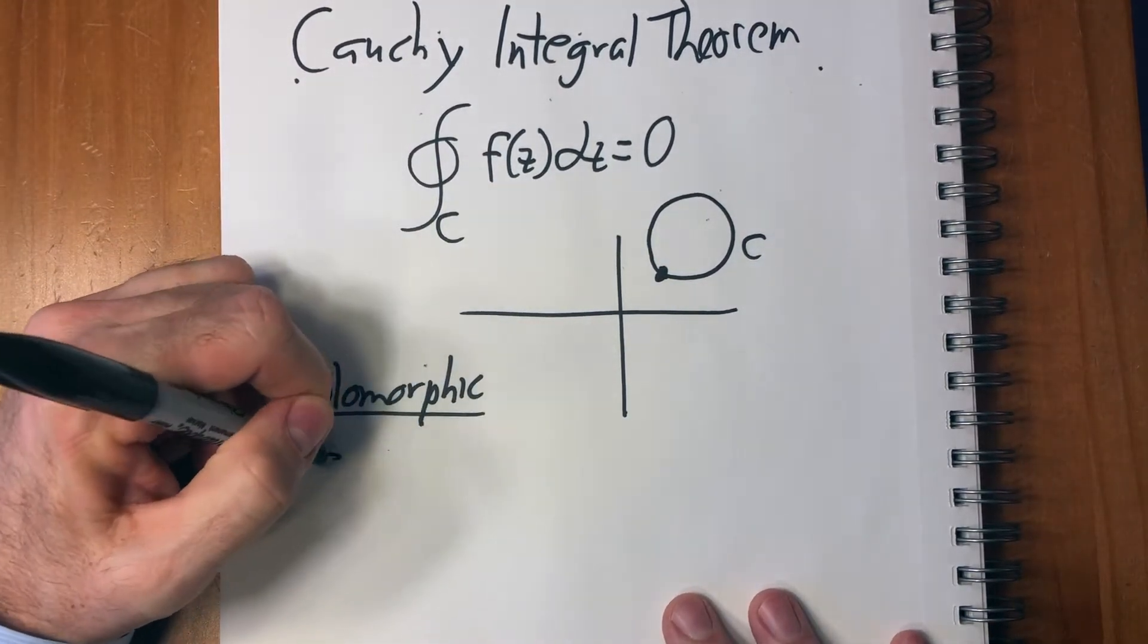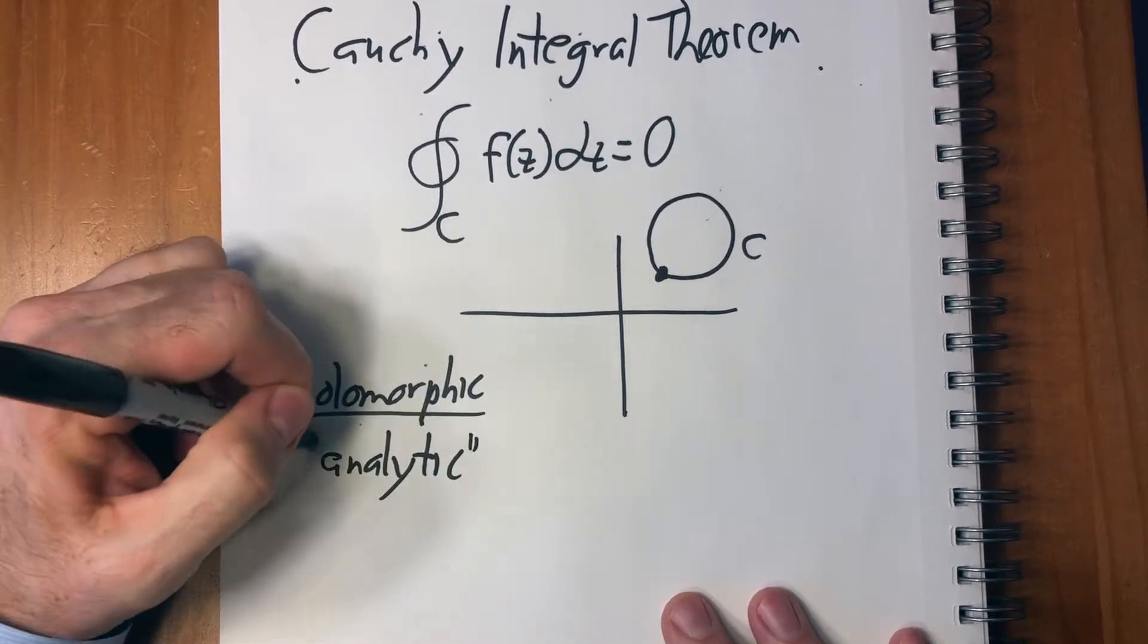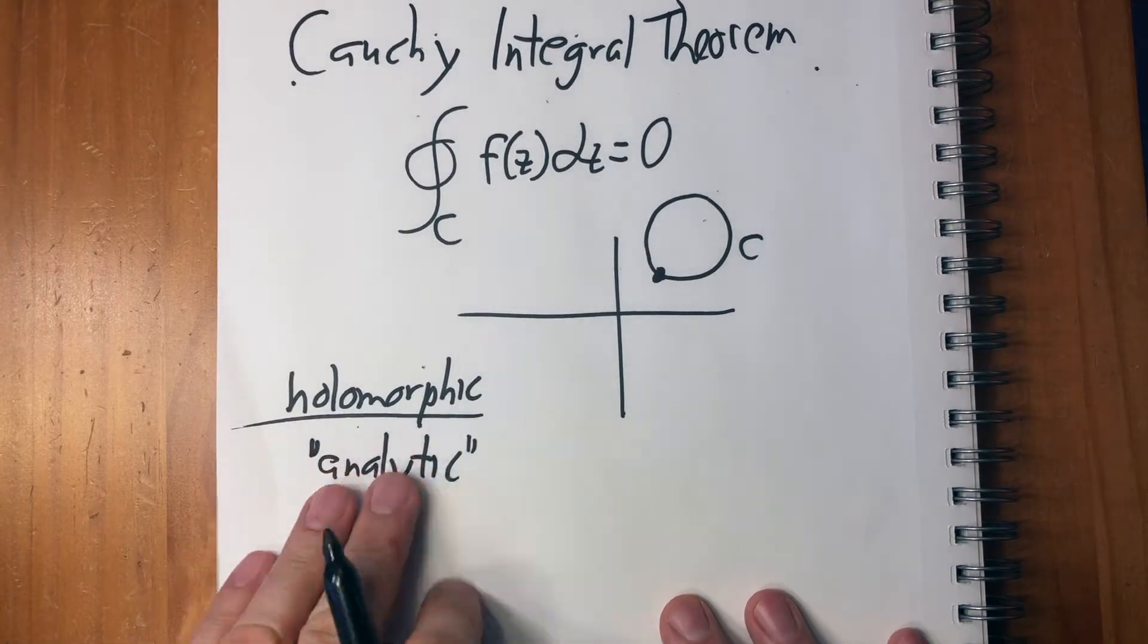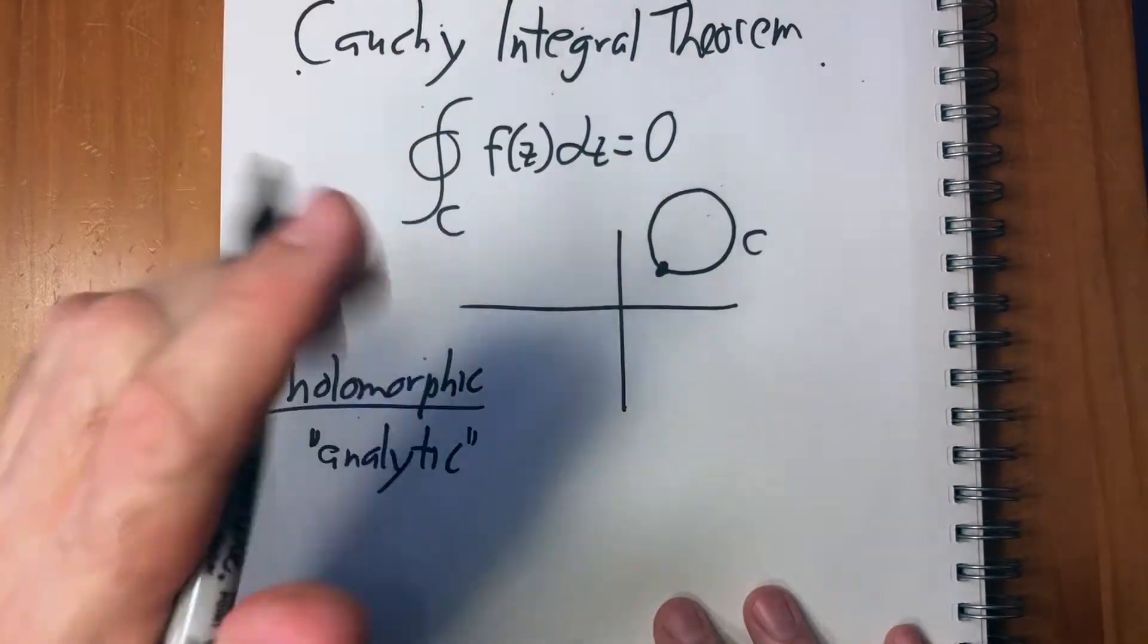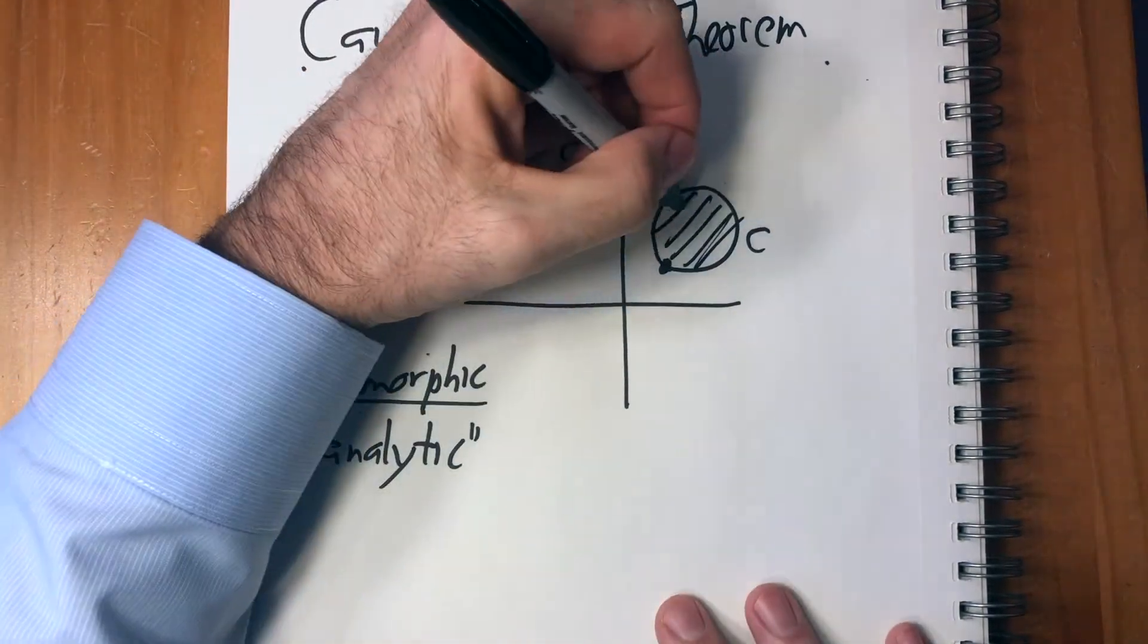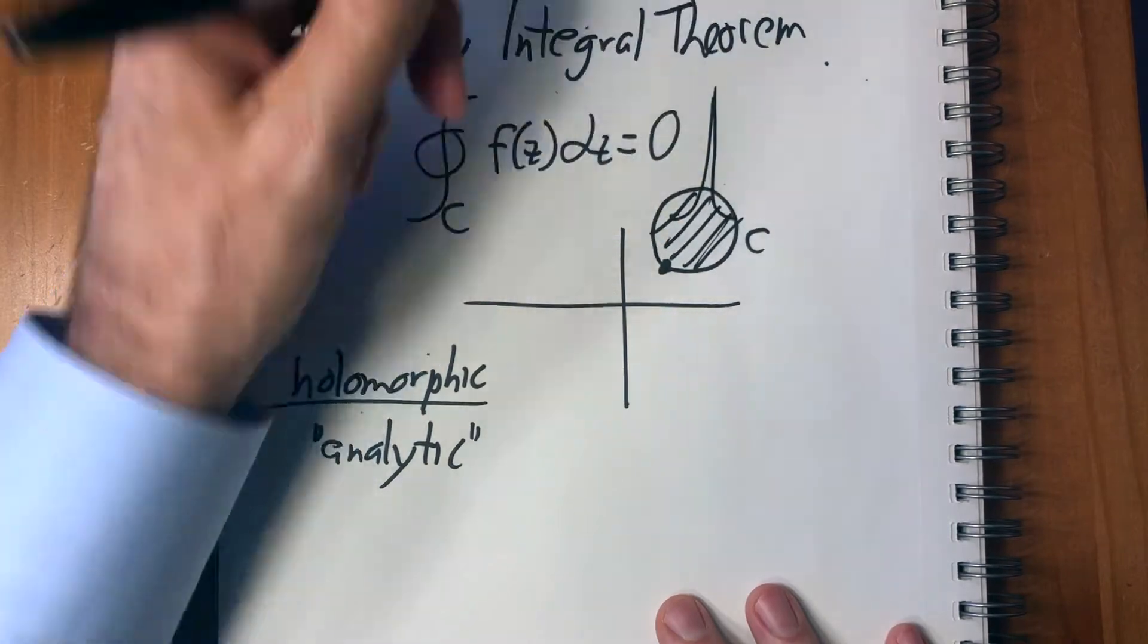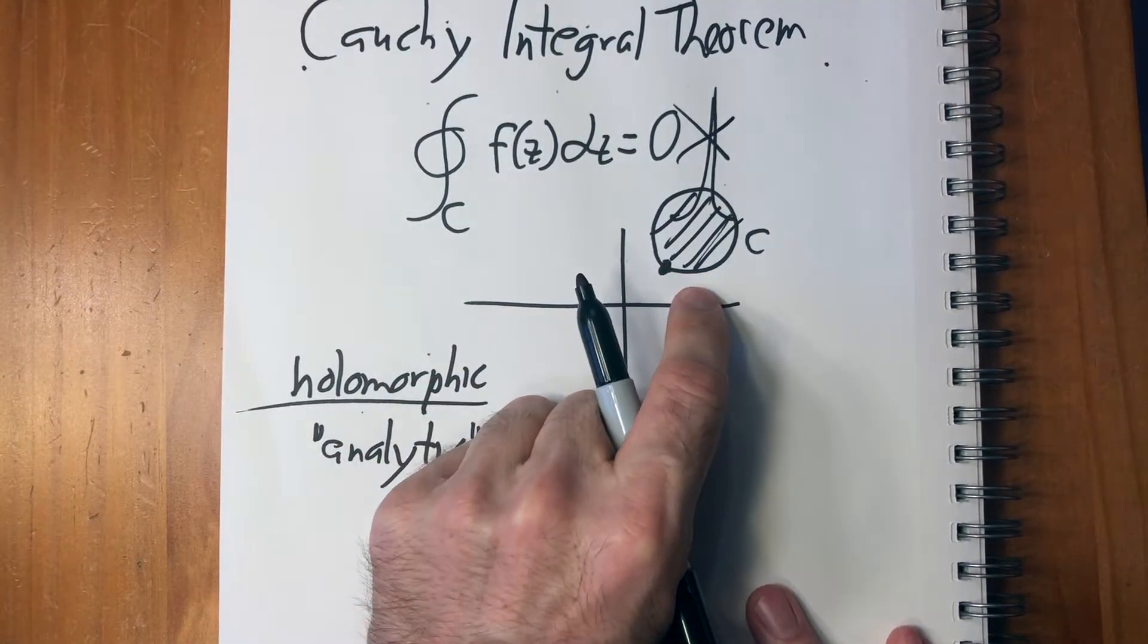And then the other word for it is analytic. So what that means is that it's differentiable everywhere. So if the region here is holomorphic, meaning that there are no poles, which means it doesn't shoot up to infinity anywhere. If that doesn't happen, then the line integral is going to be zero.